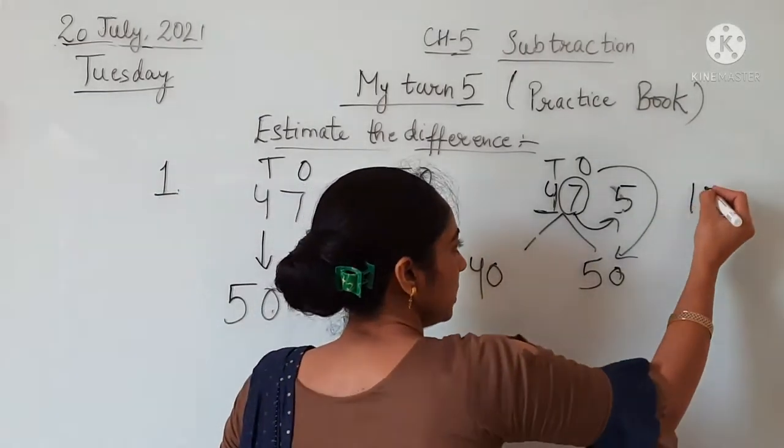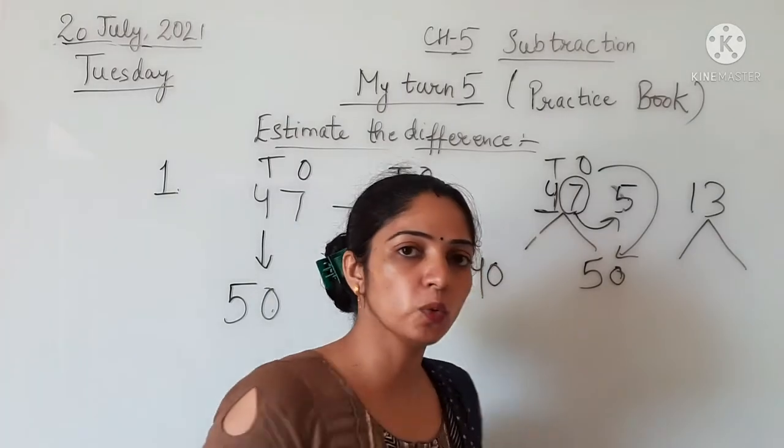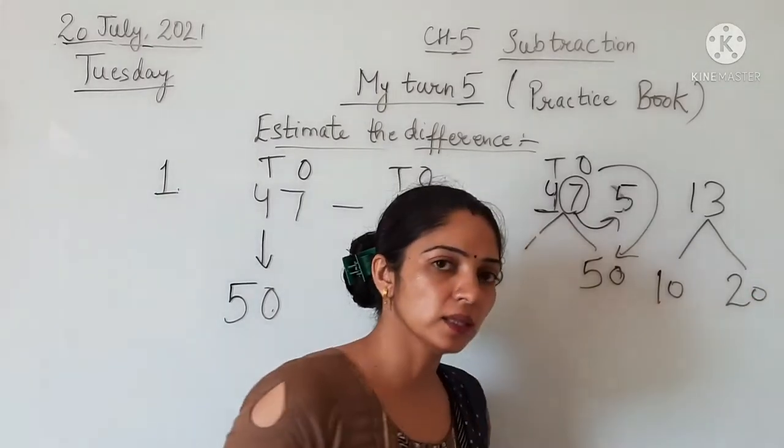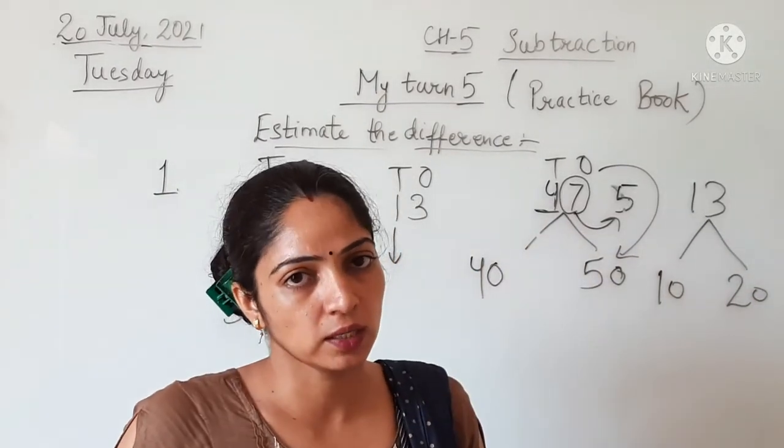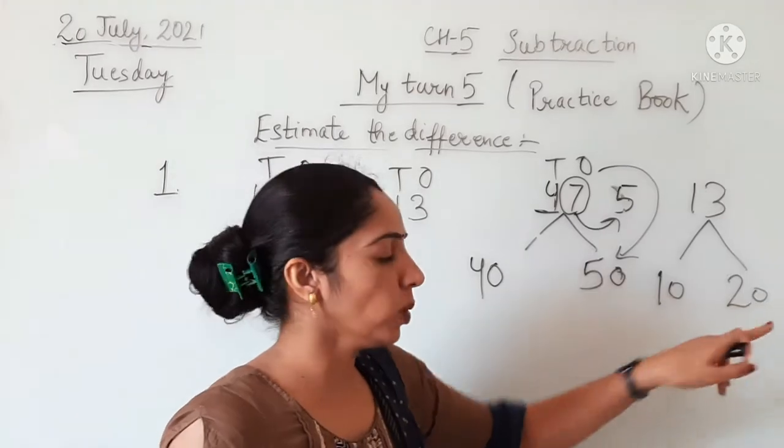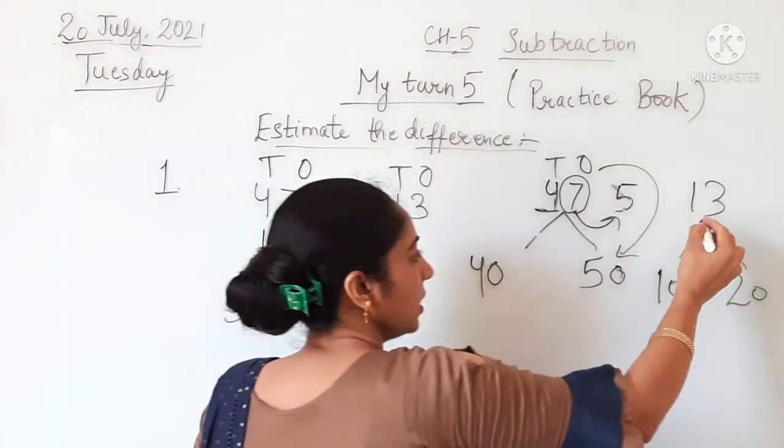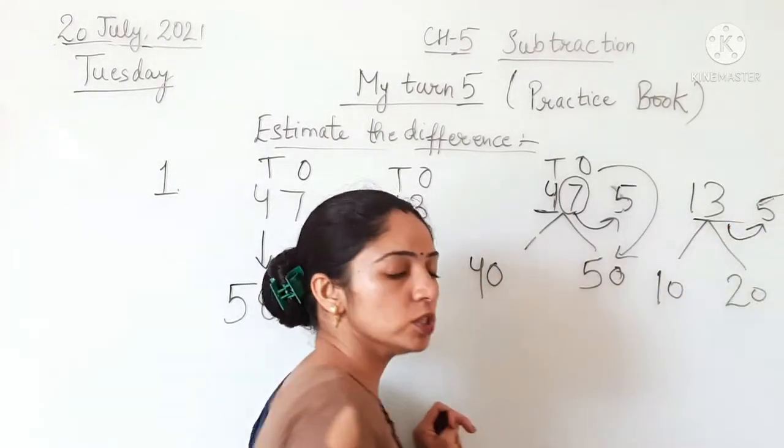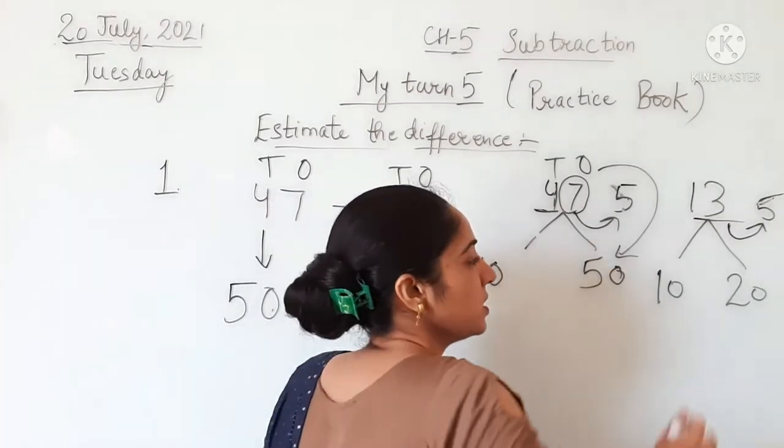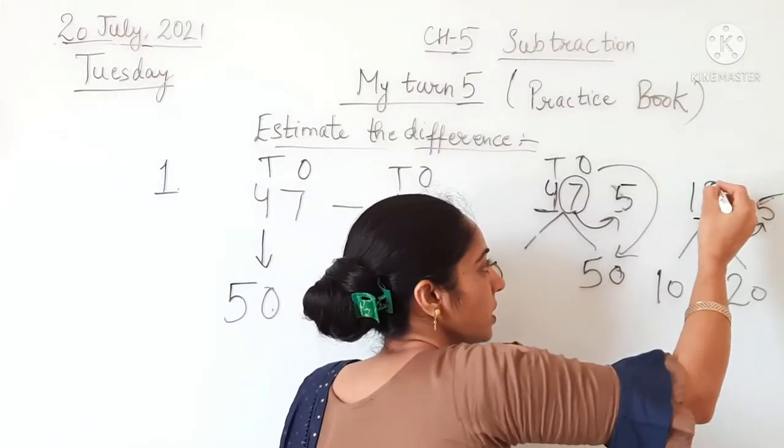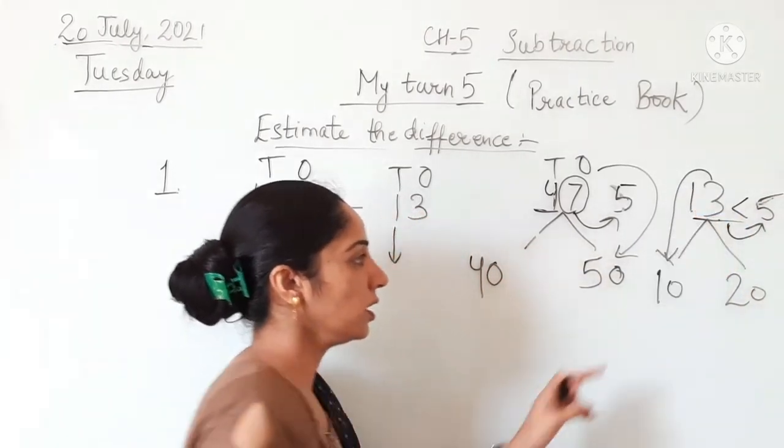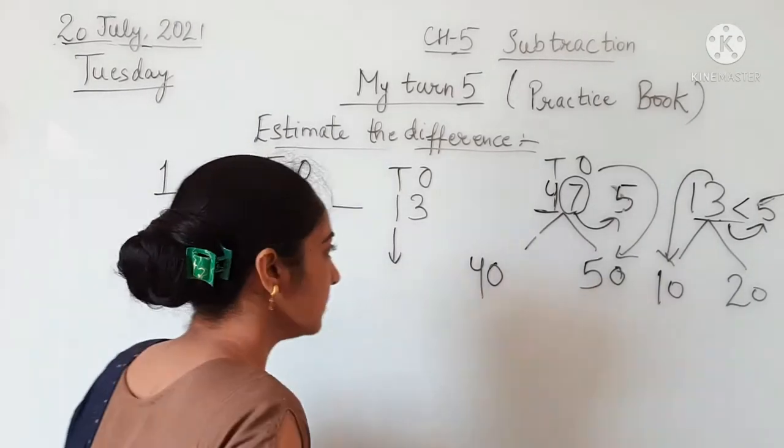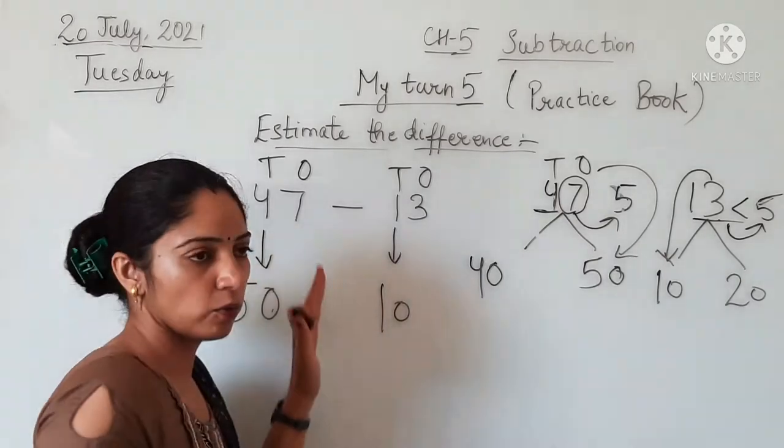What about 13? 13 lies between which two tens? It lies between 10 and 20. Now compare the ones digit with 5. When we compare 3 with 5, we can see that 3 is less than 5. It means this number is smaller. If it is smaller, it means that 13 will be rounded to 10.